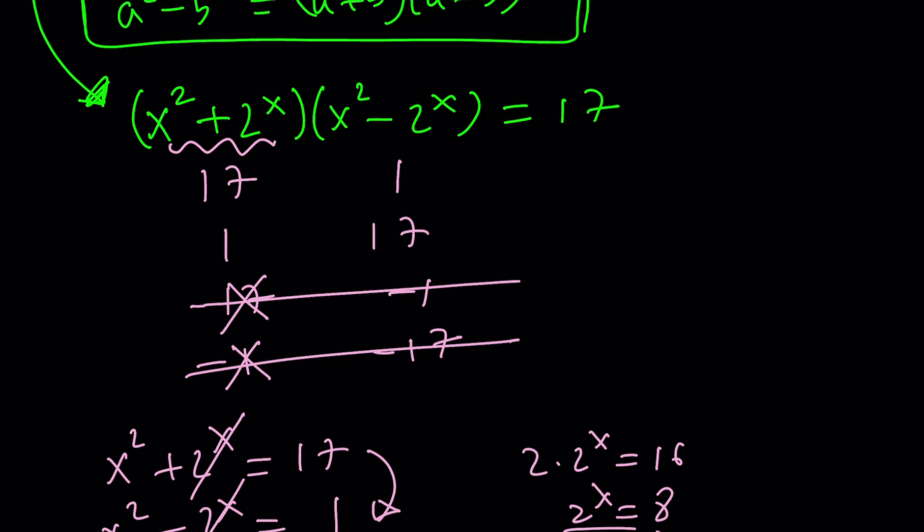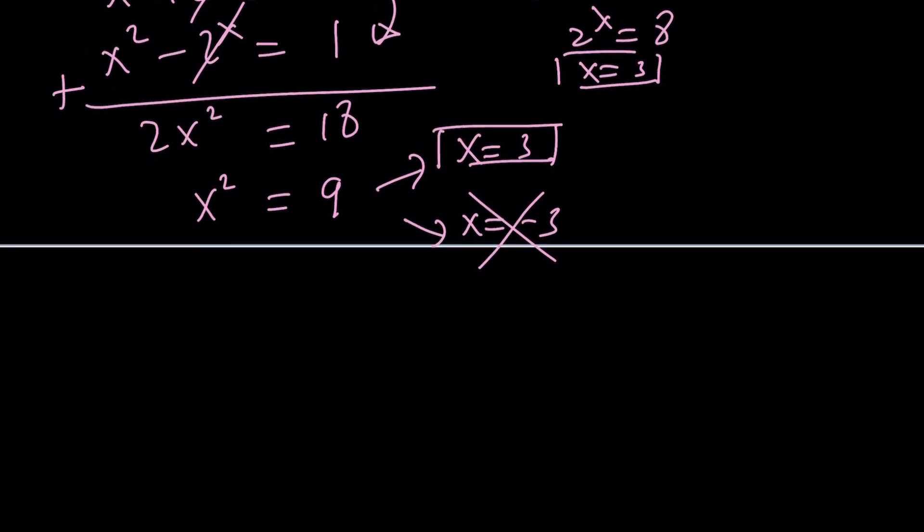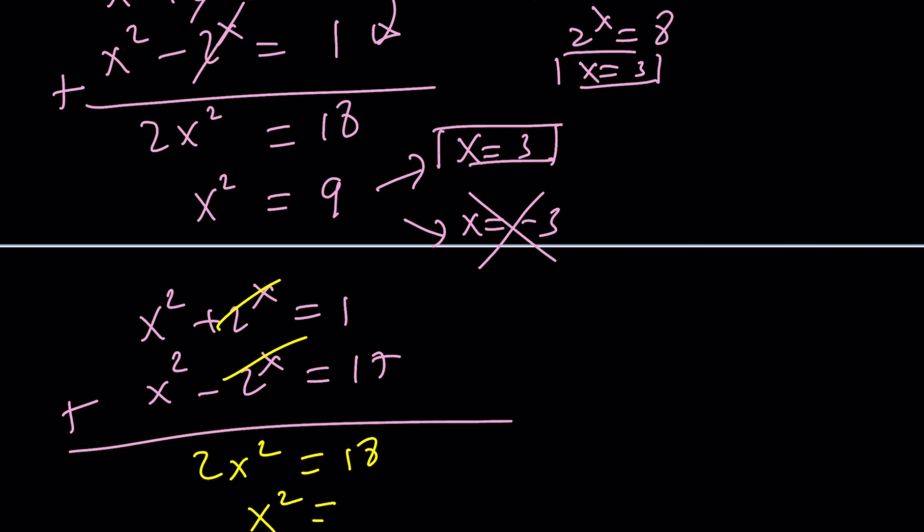This obviously does not work. As I said earlier, if you replace x with a negative number, you'll get a fraction and then a negative integer squared is an integer. Their sum will never be an integer. So x can only be 3 from here. What about the other case?